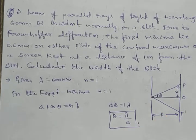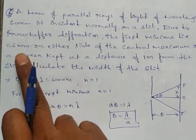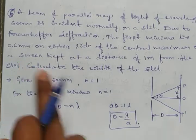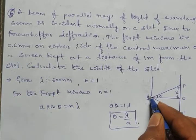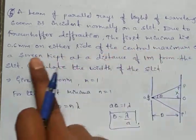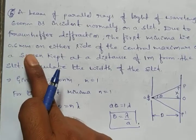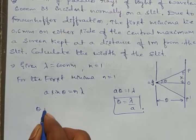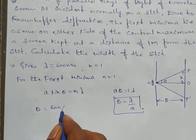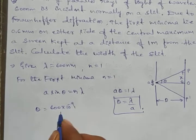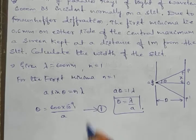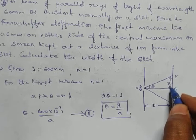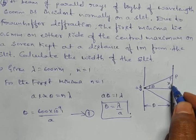From equation one, theta equals lambda over a, where lambda is 600 nanometers, i.e., 600 into 10 to the power minus 9 meters, divided by a. Here, x is the distance of the first minima from the central maxima, and d is the distance between the screen and the slit.